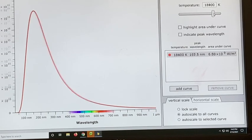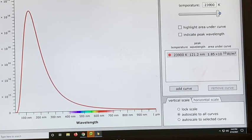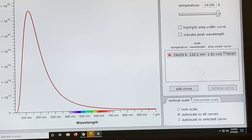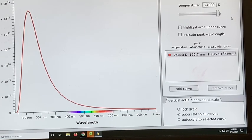And then finally, we'll go all the way up to 24,000. I think that's the highest we can get. Okay, and 24,000, our peak radiation is at 120.7 nanometers, and our peak energy is now 1.88 billion watts per meter squared. So that's that.